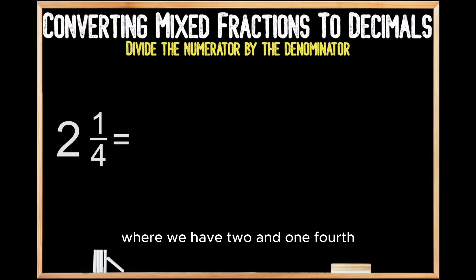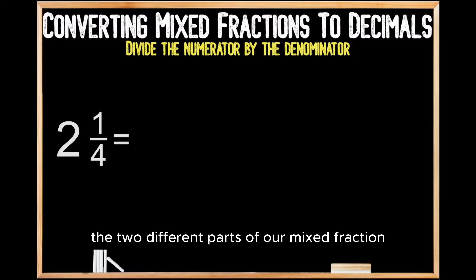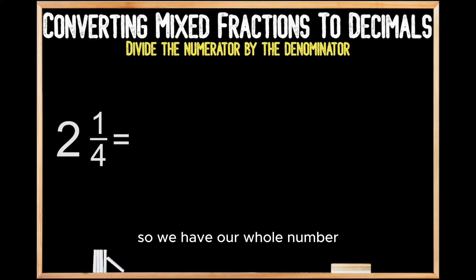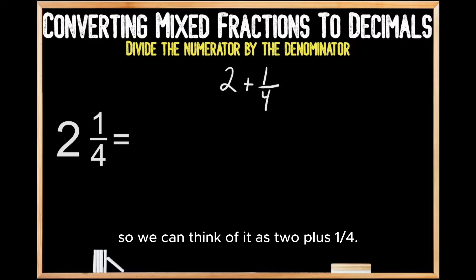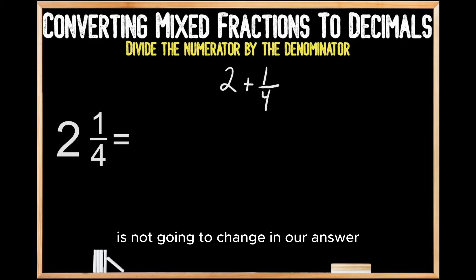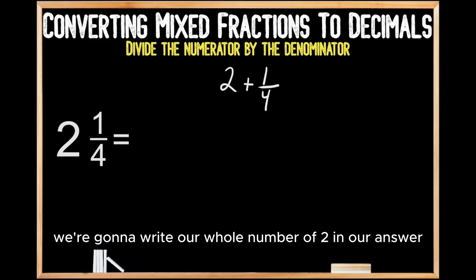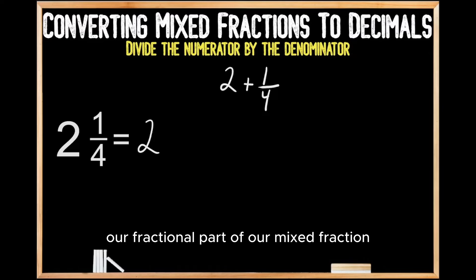Let's jump into this second example, where we have 2 and 1 fourth that we need to convert into a decimal. So the first thing we're going to do is break apart the two different parts of our mixed fraction. We have our whole number, which has a value of 2, and then we have the fractional part, which has a value of 1 fourth. So we can think of it as 2 plus 1 fourth. Just like with the first problem, the value of our whole number is not going to change, so we're going to write our whole number of 2 in our answer.